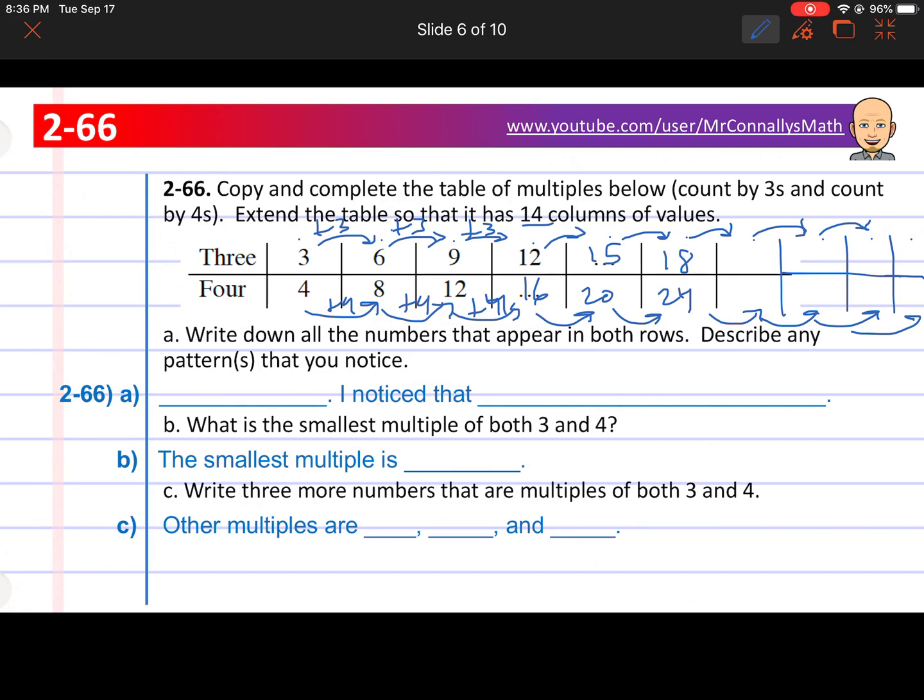Now write down all the numbers that appear in both rows. Describe any patterns you notice. So you'll list all the numbers here. Let's look for, we'll go 3, 6, 9, 12, 15, 4, 8. I notice 12 is at least one number. And then we'll keep going. Here's a little hint as to what the other numbers are going to be. So keep going and find the rest of them. There are going to be more. You'll put all those numbers here.